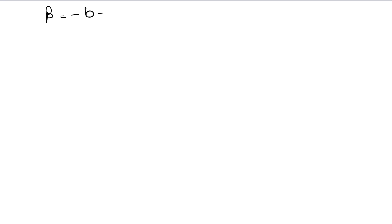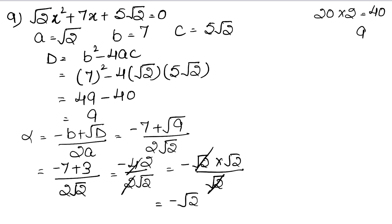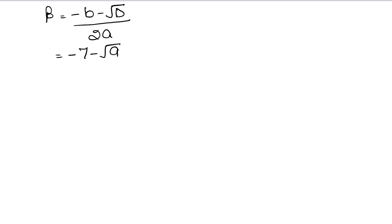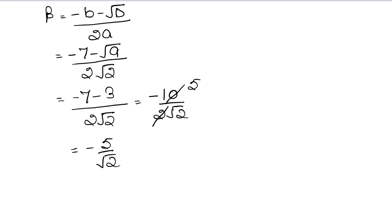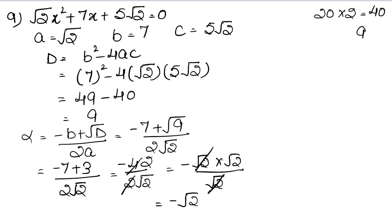Now for beta. Beta equals (minus B minus √D) upon 2A, giving minus 7 minus 3 upon 2√2, which is minus 10 upon 2√2. Since 2 ones are 2 and 2 fives are 10, beta simplifies to minus 5 upon √2. So the roots for question 9 are minus 1/√2 and minus 5/√2.